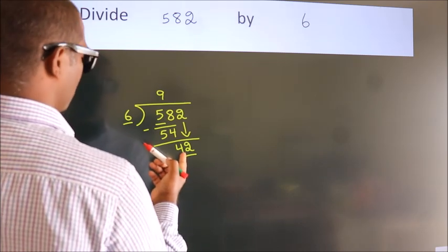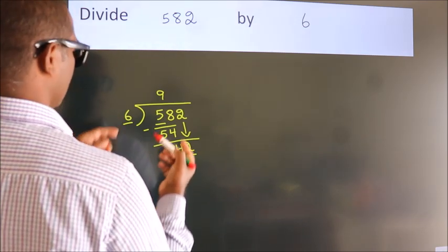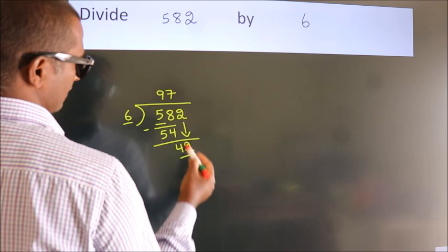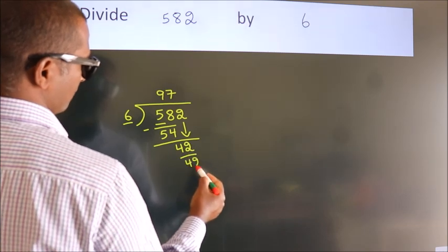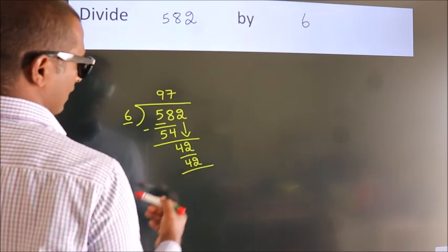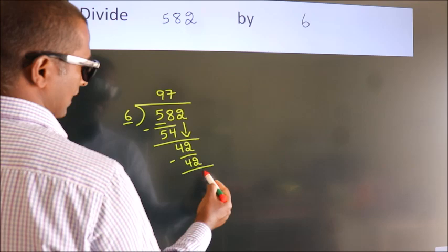When do we get 42? In the 6 table, 6 sevens, 42. Now we subtract, we get 0.